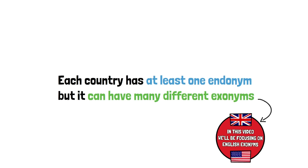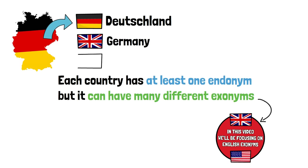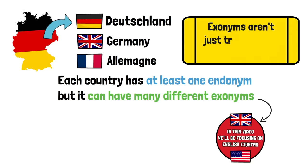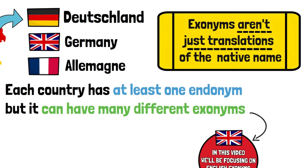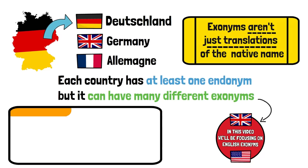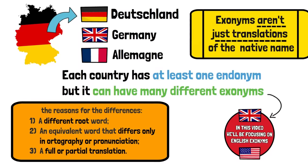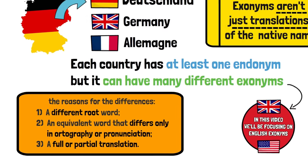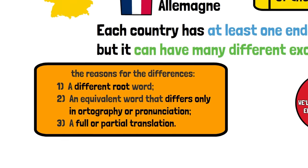For instance, Deutschland is the endonym for the country that is also known by the exonym Germany in English and Allemagne in French. Exonyms aren't just translations of the native name into another language. While they can be that, they can also be fully different names that a particular people of the world have for that nation. The reason for the difference between endonyms and the various exonyms are usually one of three: it can be derived from a different root, as is the case with Germany and Deutschland.